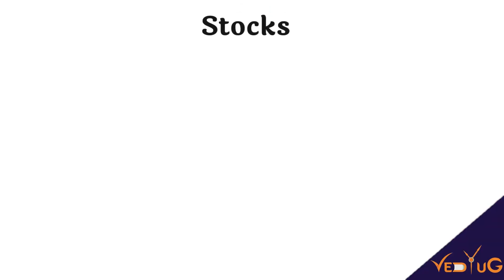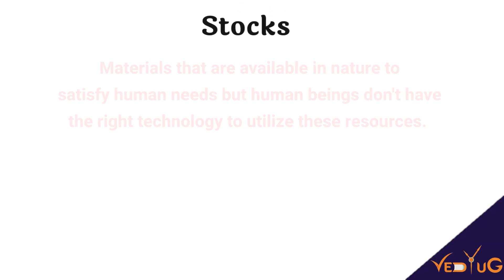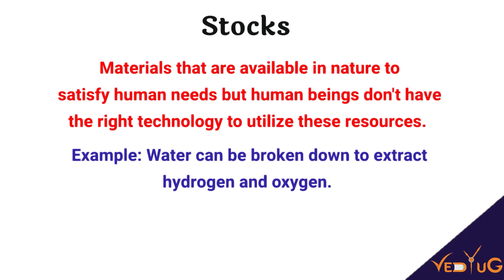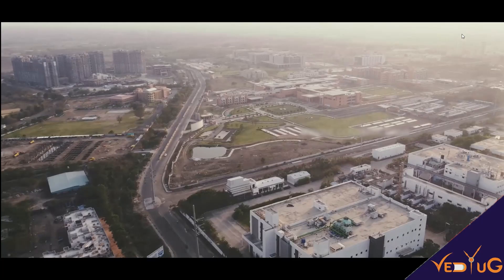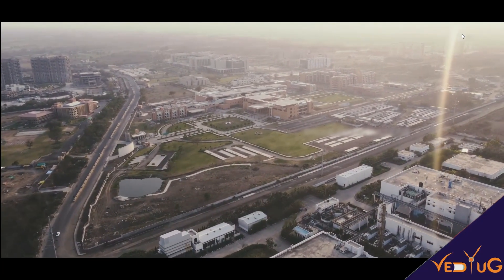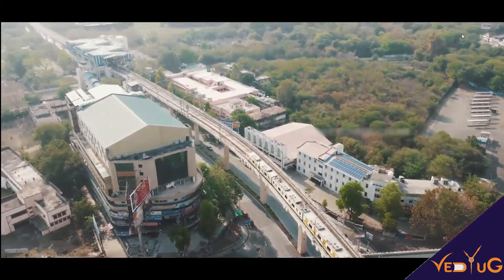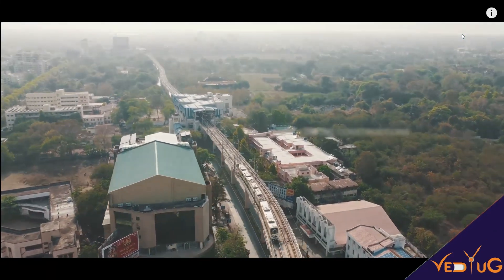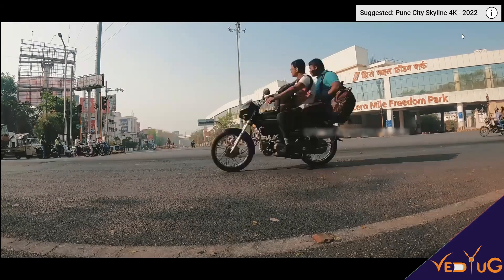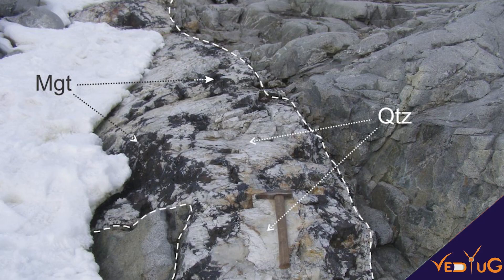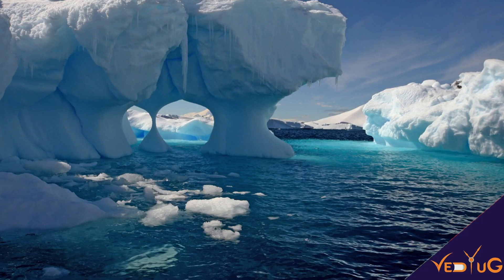Stocks are resources available in nature to satisfy human needs, but we don't have the right technology to utilize them. For example, there are many minerals and resources available below the icebergs of Antarctica, but we don't have the developed technology to use them.